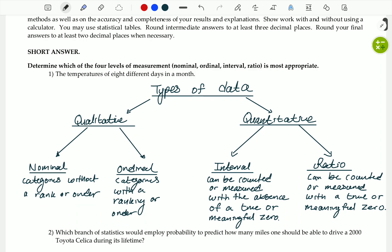Number one says, determine which of the four levels of measurement, nominal, ordinal, interval, and ratio, is most appropriate. The temperatures of eight different days in a month. Now, what I did is I created a diagram.